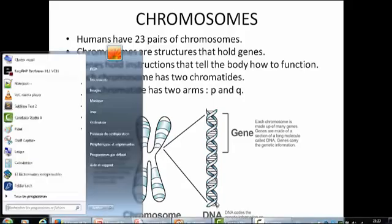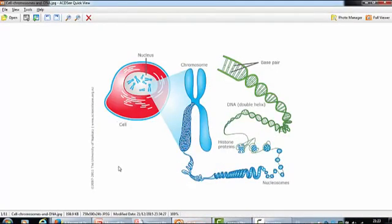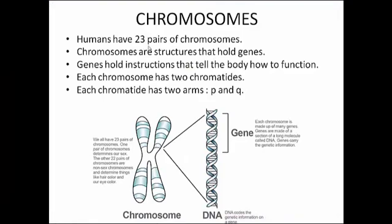We'll now speak about chromosomes. In the cell there is a nucleus, and inside the nucleus there are chromosomes. Chromosomes are double-helix DNA — two strands with bases linked between them as base pairs. Humans have 23 pairs of chromosomes. Chromosomes are structures that hold genes, and genes hold instructions that tell the body how to function.